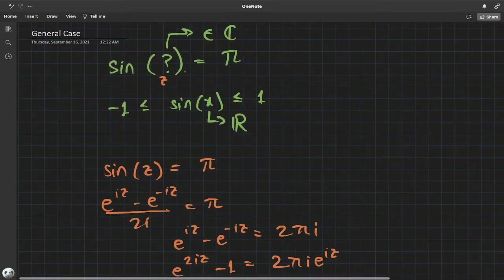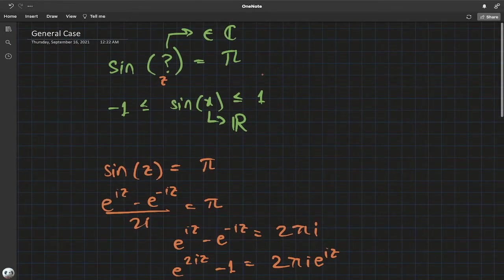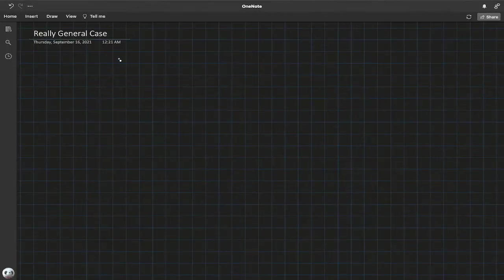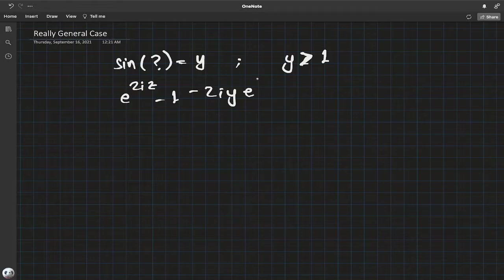One good question is can we generalize this approach? This was for just π. Can we just extend it out and check whether it works? Well, let's try that. So let's test out the really general case: sine of z equals some y, and y should be greater than one. Otherwise, we'll always have real values.